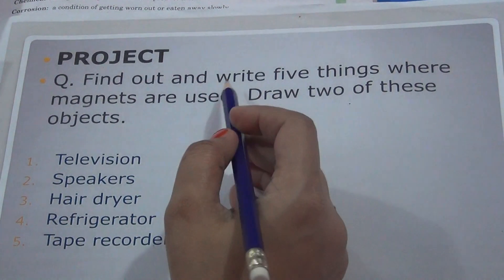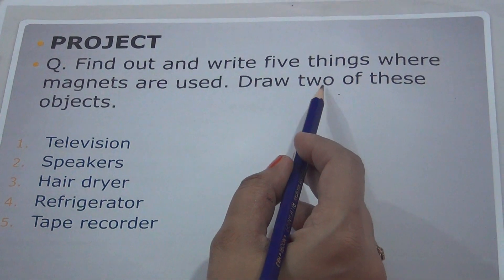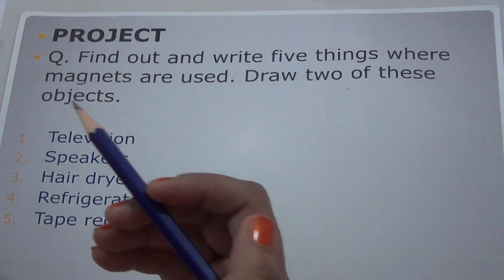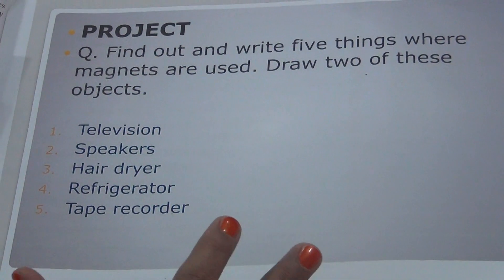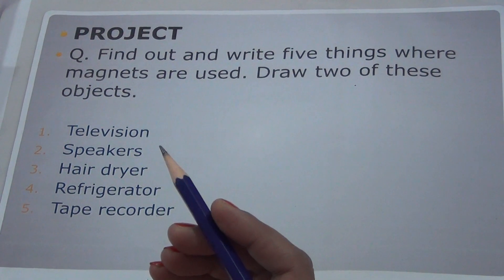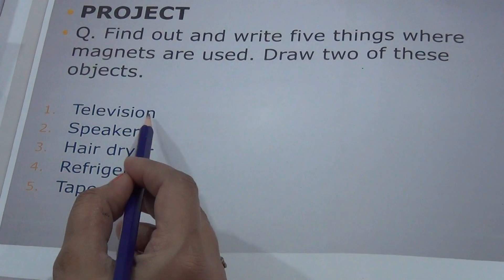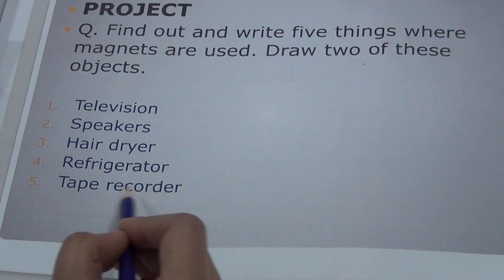Now the last activity is a project. Find out and write five things where magnets are used. Draw two of these objects. You have to name five things in which magnets are used, and draw two of these things in your copy. In electronic things, magnets are used. For example, television, speakers, hair dryer, refrigerator, tape recorder.